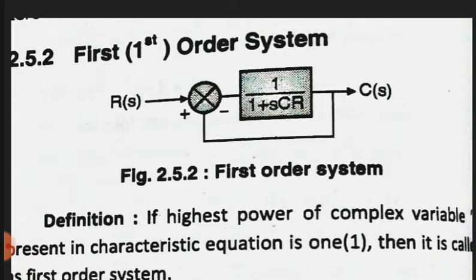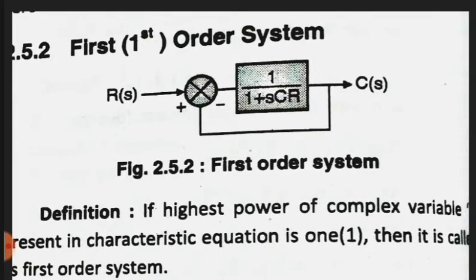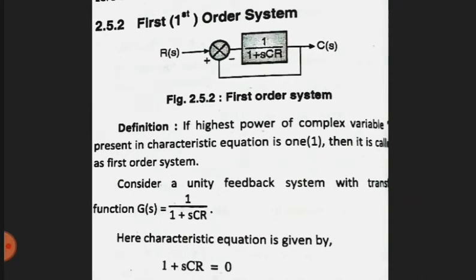Now for the first order system, looking at the block diagram, the transfer function is 1/(1 + sCR). The definition is: if the highest power of the complex variable present in the characteristic equation is one, then it is called the first order system. We consider the unity feedback system with the transfer function 1/(1 + sCR), as already shown in the diagram.